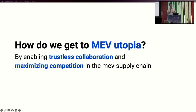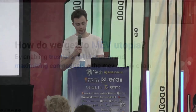We'll show how we get to MEV utopia by enabling specialization in the MEV supply chain through creating protocols for trustless collaboration that allow many different parties to compete at each role. This is a very difficult thing to do because parties don't necessarily trust each other in the MEV supply chain. We'll use MEVboost as a case study to show how you can enable trustless collaboration and competition by using privacy and commitments.